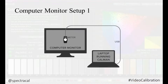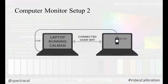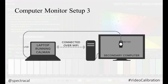Here is one common setup: you have a Windows laptop driving a second monitor, and CalMAN is running on the laptop. Or you could have CalMAN running on a laptop calibrating a remote computer on the same network, or a laptop calibrating a remote computer with a connected monitor.